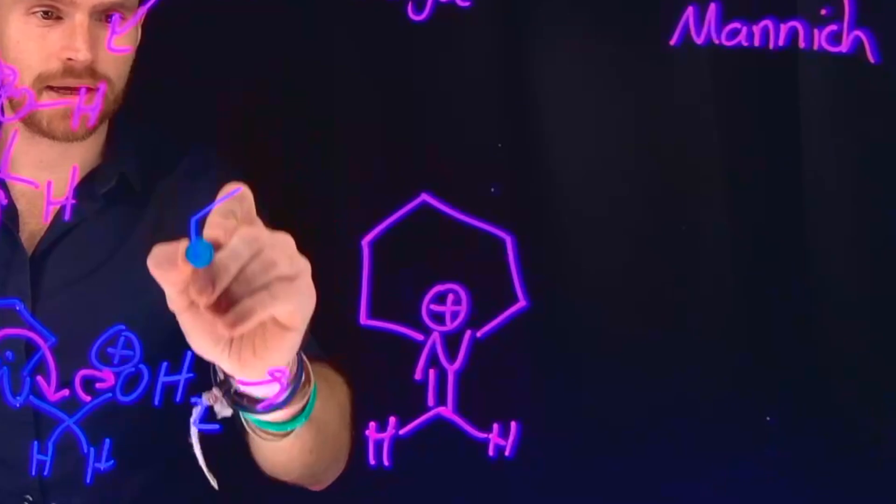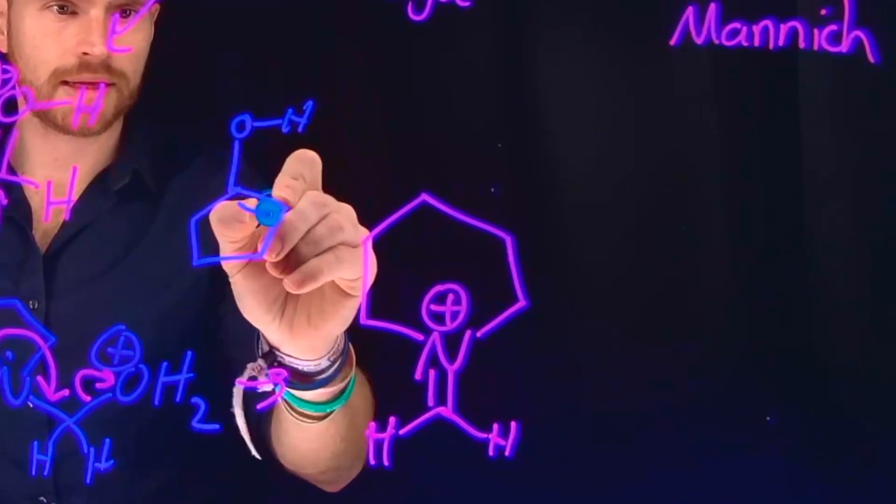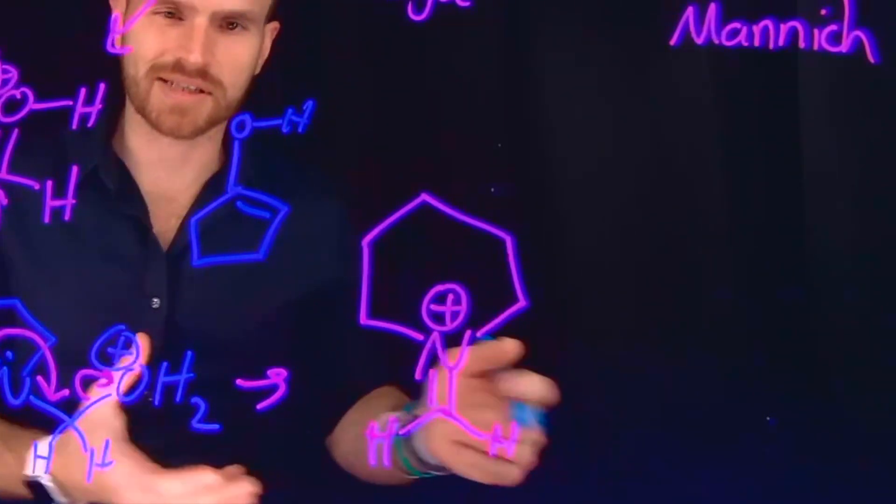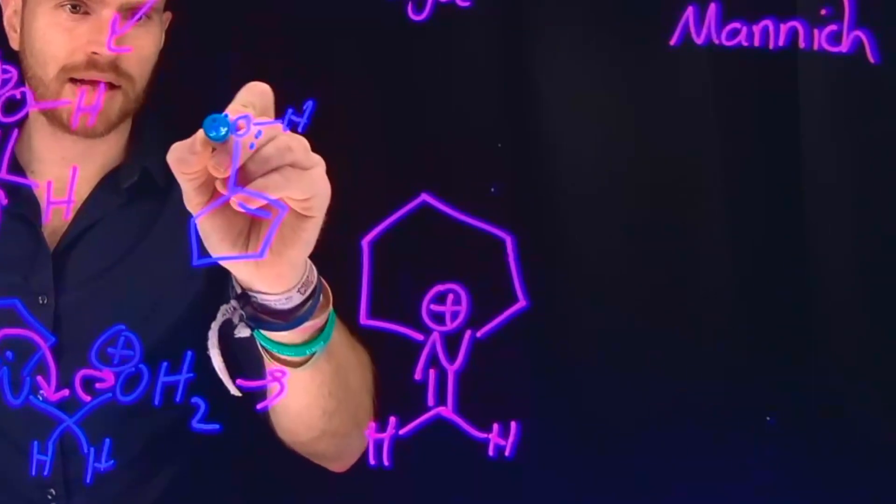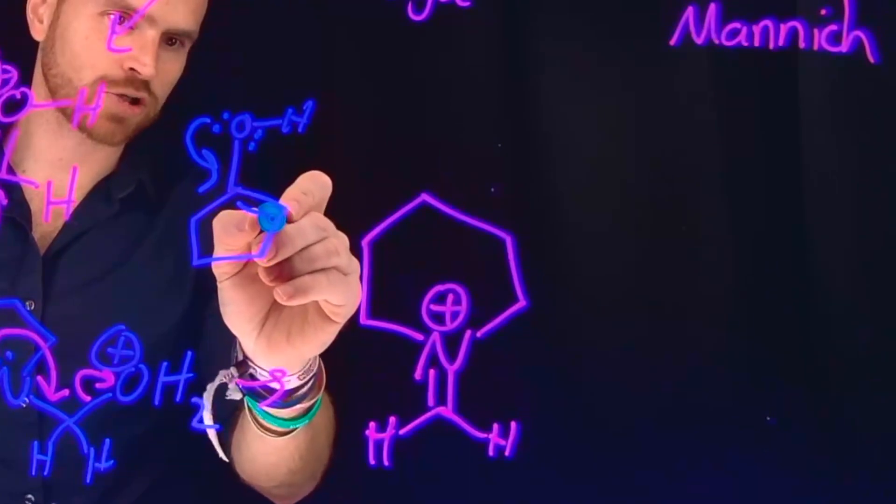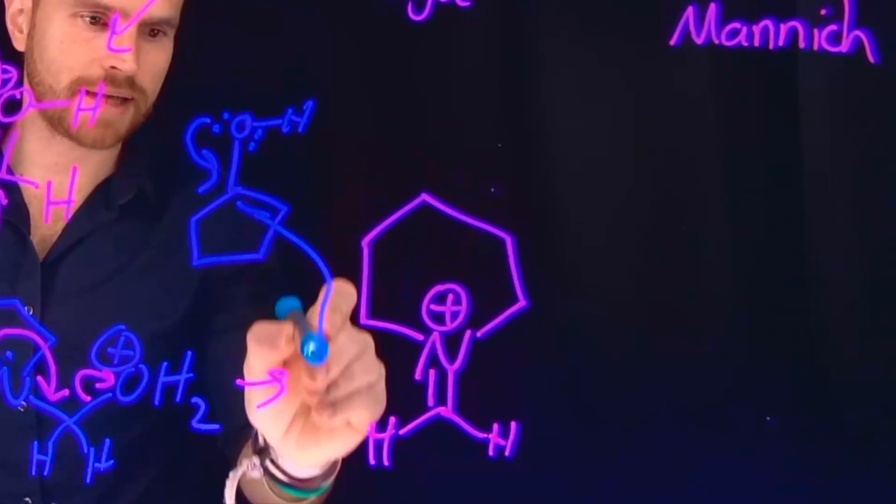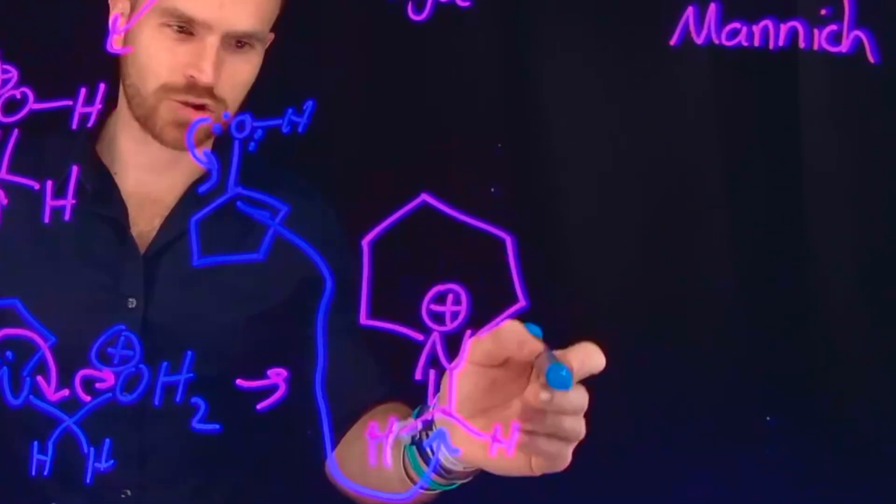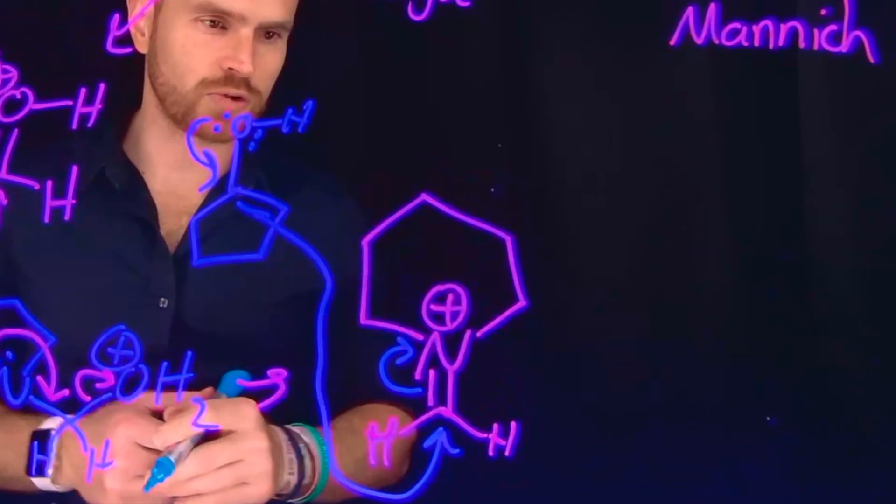And what might happen is that newly formed enol at this position can actually do what you normally see when you think of aldol reactions, except this is a mixed aldol reaction. So what will happen is these electrons can come down, making us use these pi electrons or generating a nucleophilic carbon position, which can come down and attack this turbocharged electrophilic carbon because it's adjacent to a nitrogen that's positively charged, moving up these electrons and giving us a neutral species here.